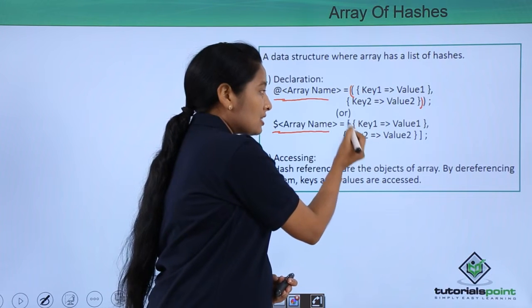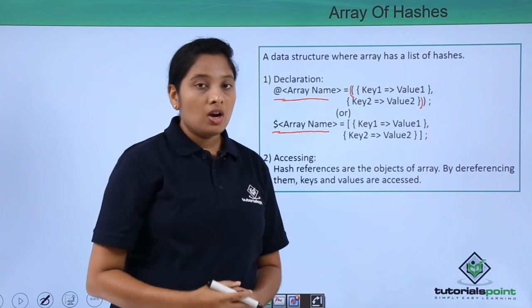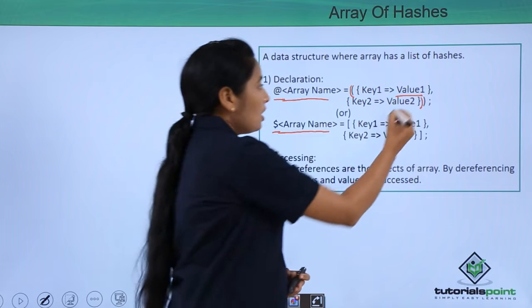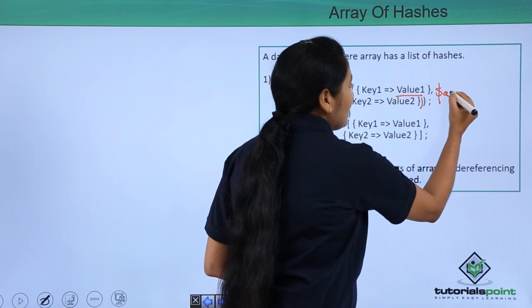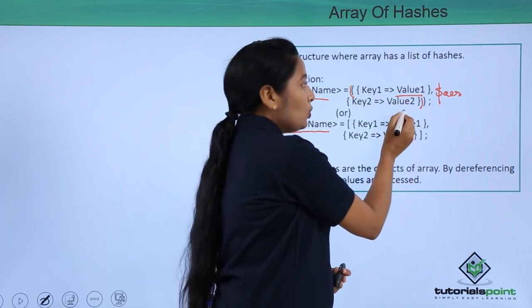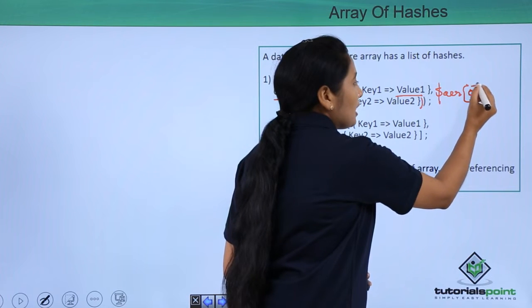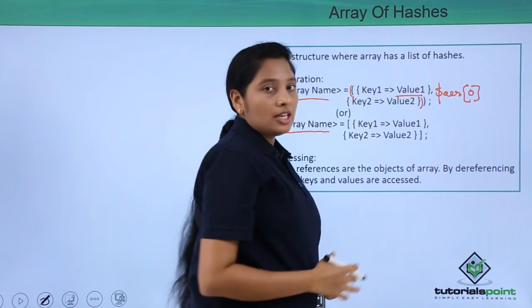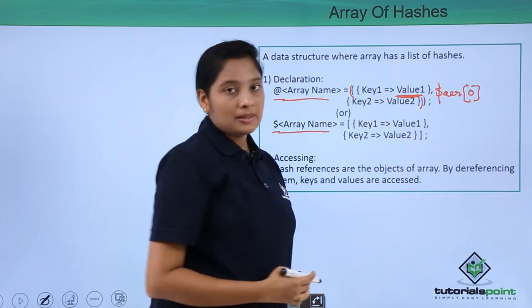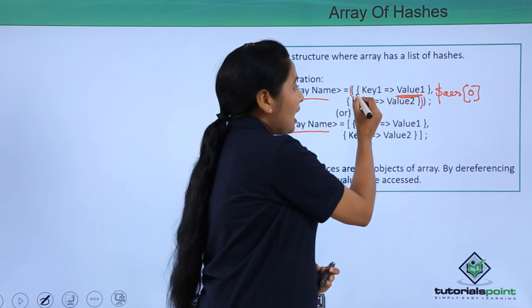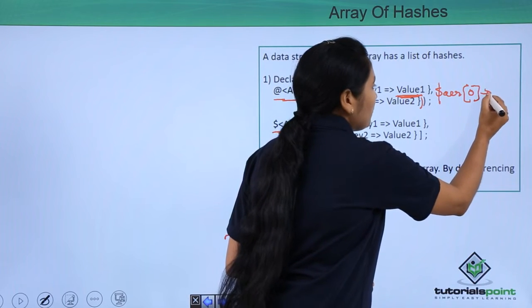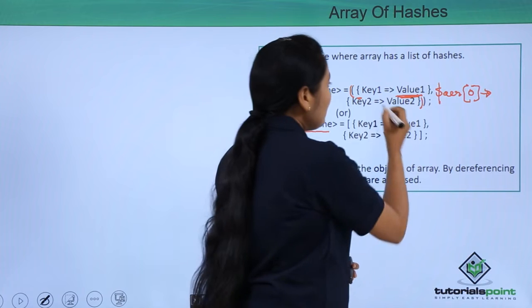To access a value in a hash reference using a plain array, use the dollar symbol followed by the array name, then provide an index number — for example, zero to access the first element. Since the hash reference starts with a curly brace, you have to use an arrow symbol, then give the key name.